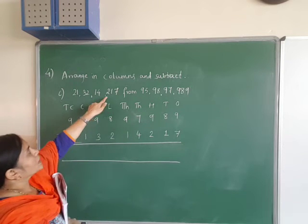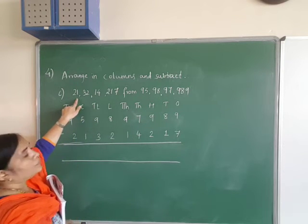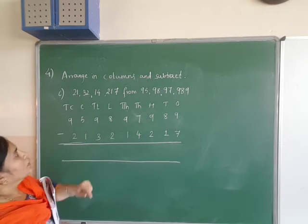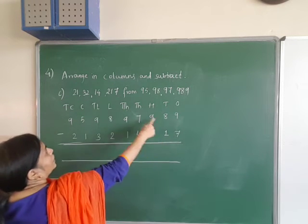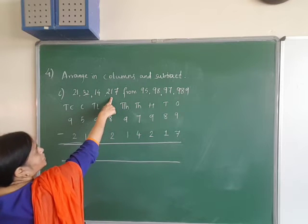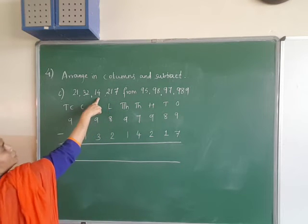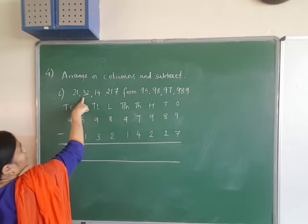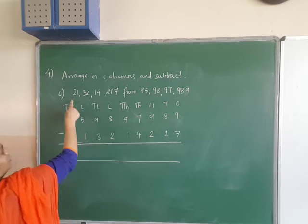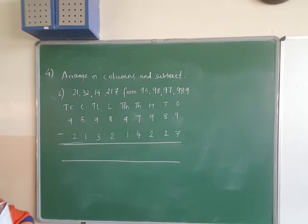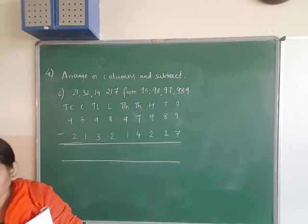Then you have the second number — place it below. Ones is 7. Tens, hundreds, thousands, ten-thousands, lakh, ten-lakh, crore, ten-crore — place according to place value, then subtract.